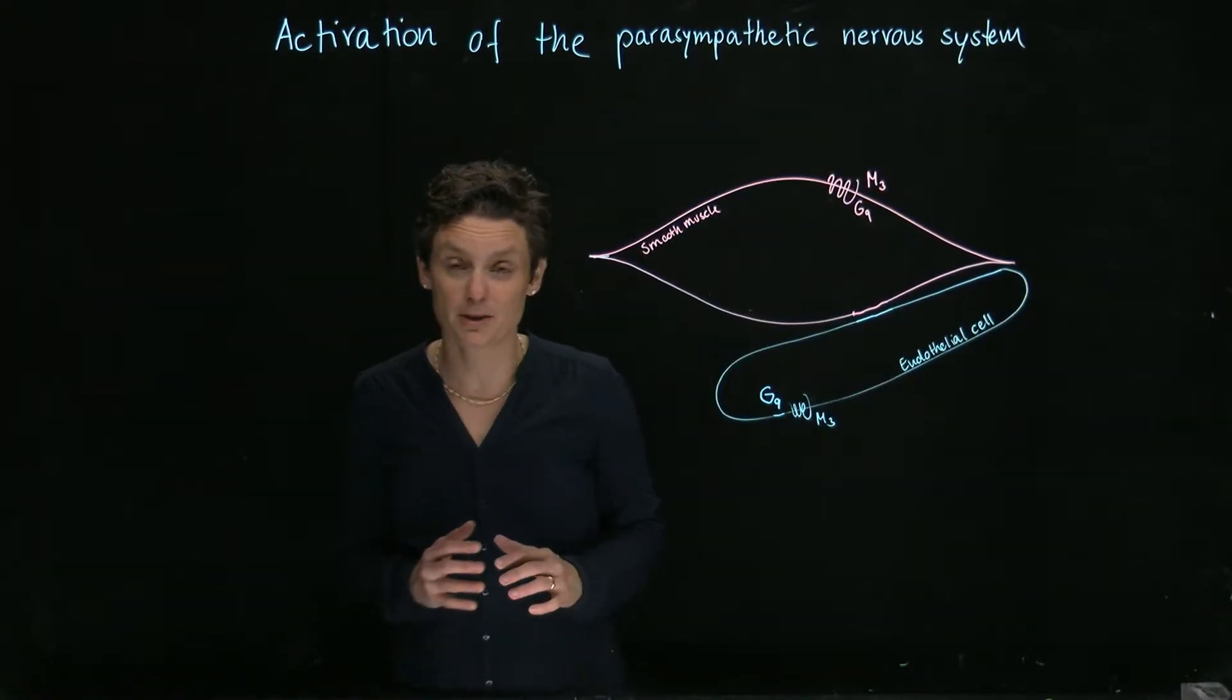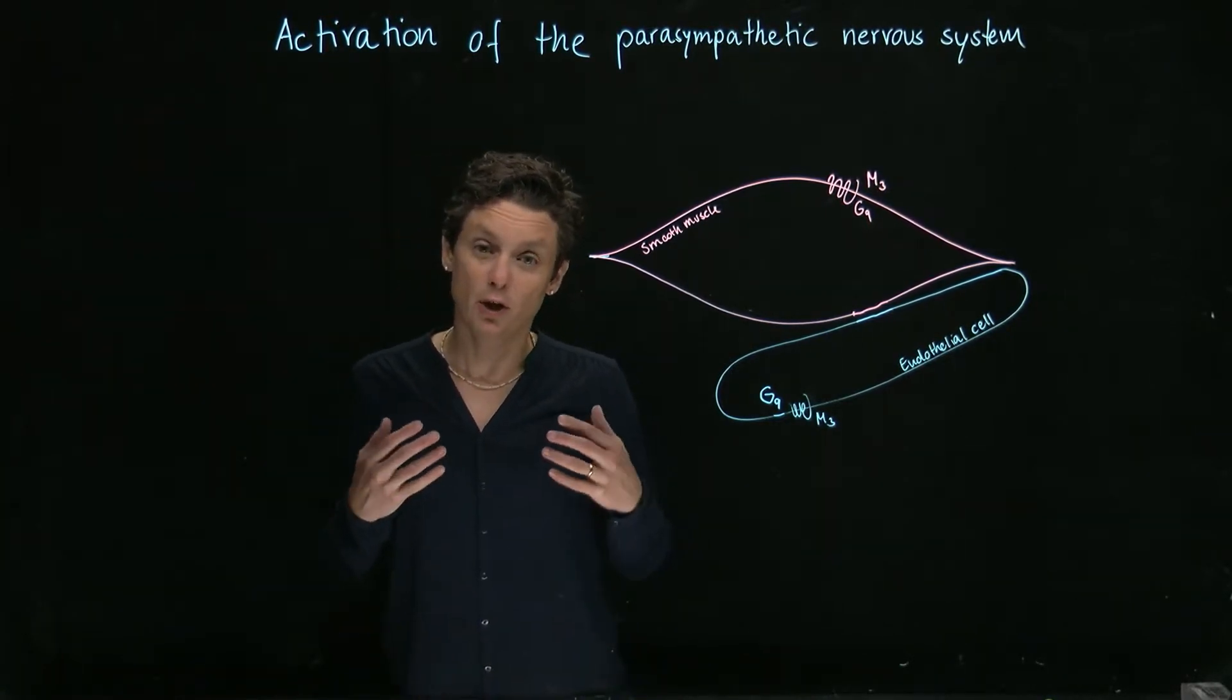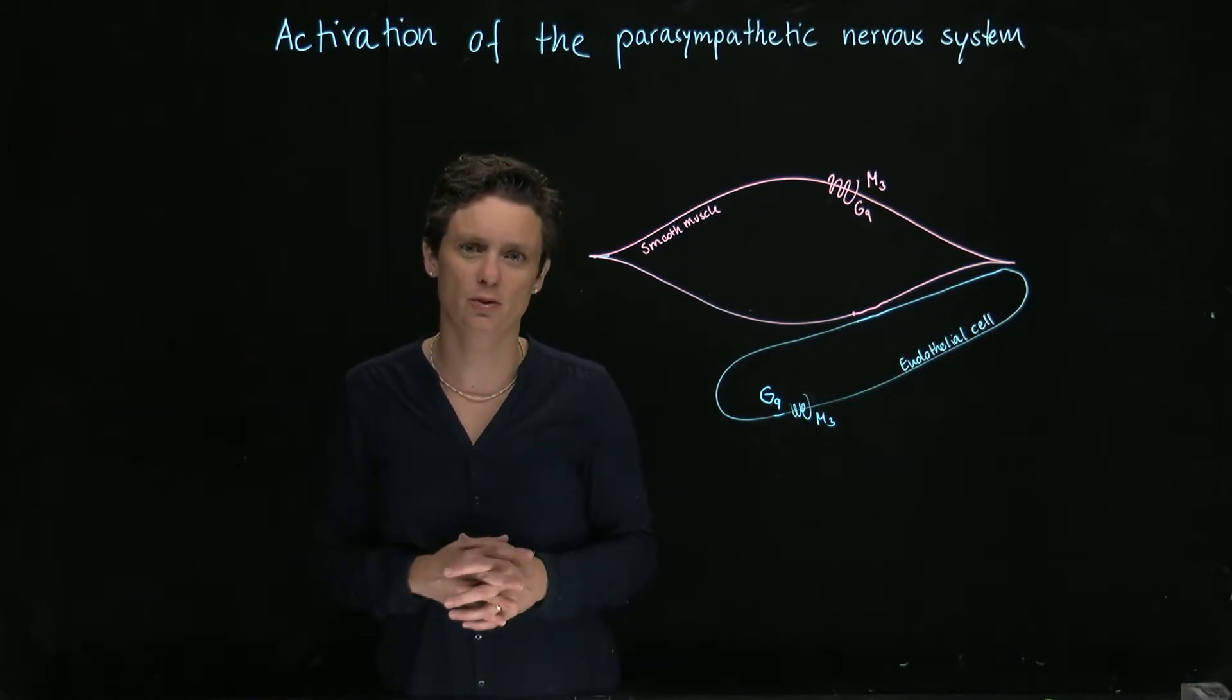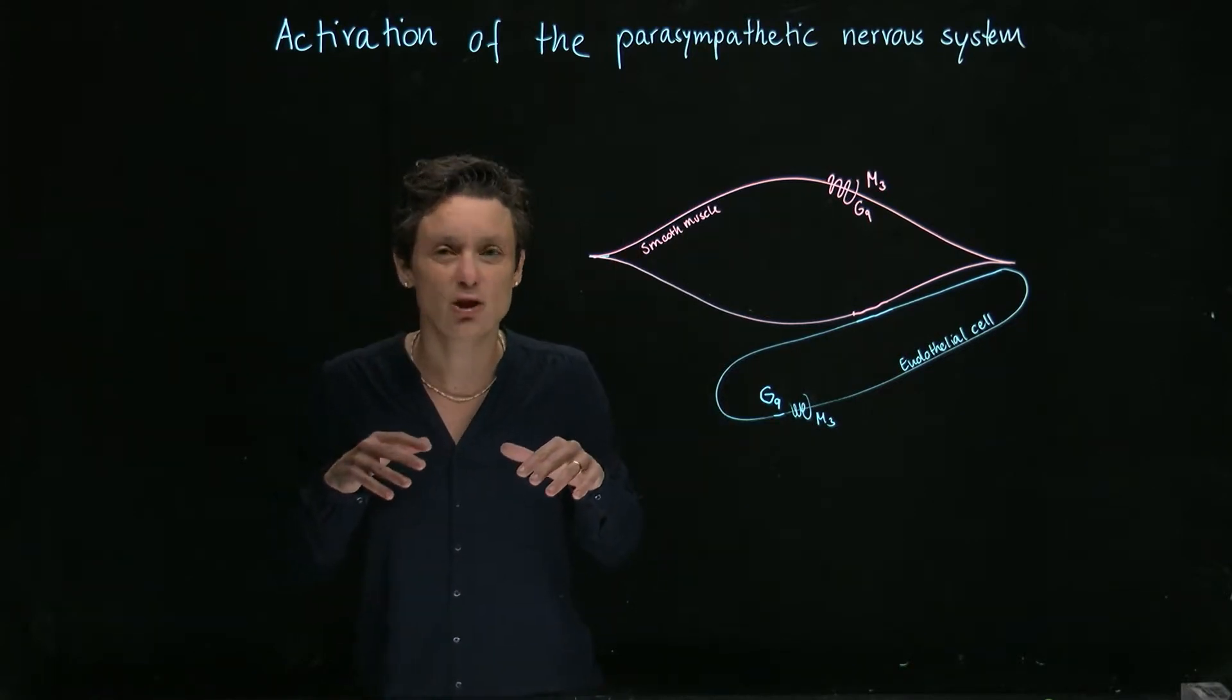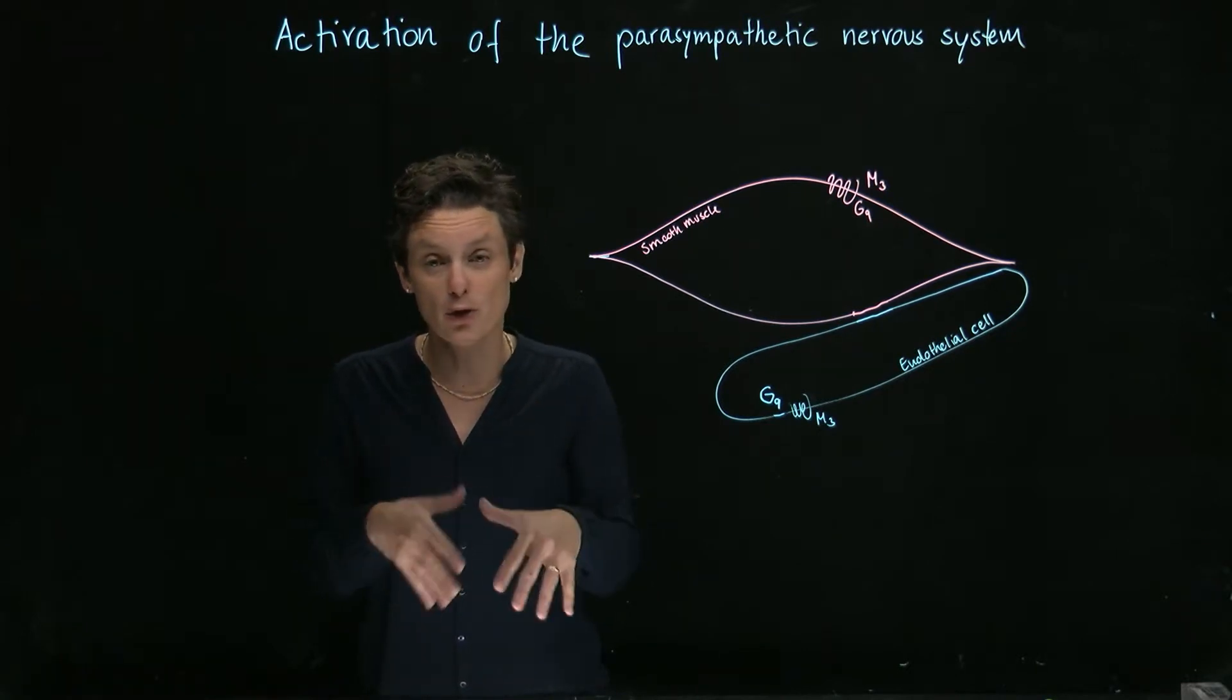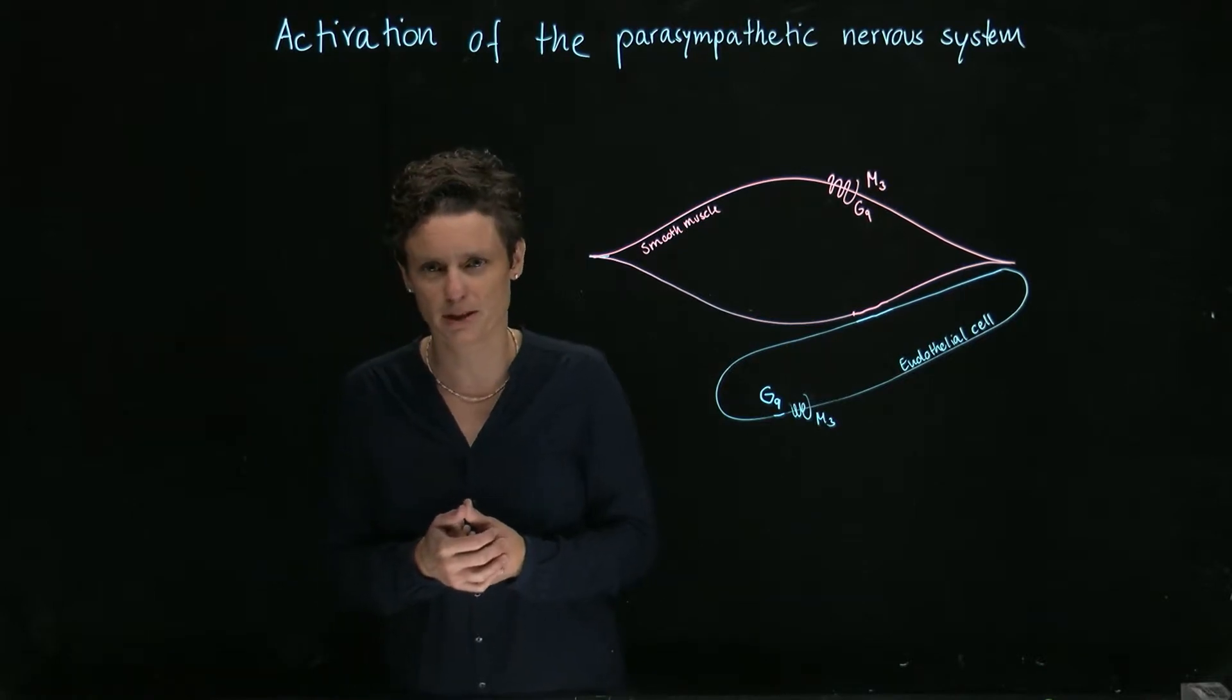I just want to finish up this video by talking about the autonomic control of blood vessels. Blood vessels are exclusively under sympathetic control. The sympathetic nervous system mediates our control of blood vessels. The parasympathetic nervous system, there's no tone onto blood vessels. There's no acetylcholine released. There are no nerves innervating the blood vessels from the parasympathetic nervous system.